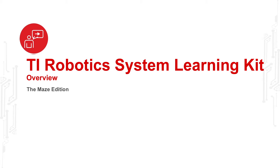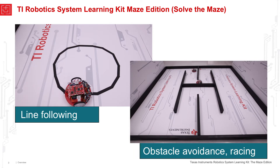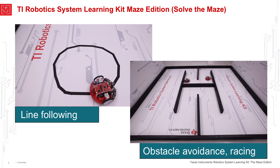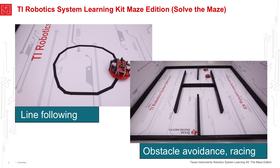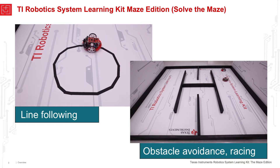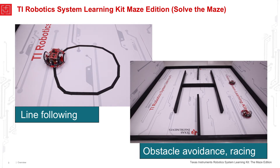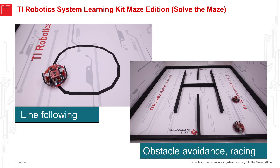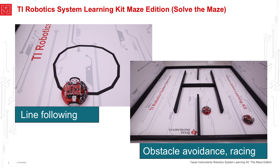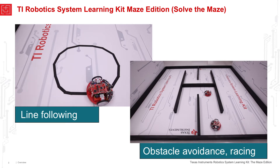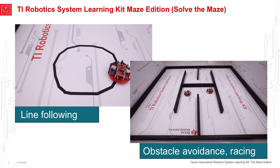Hi, John Valvano here. Let me introduce you to the curriculum: the Robot Systems Learning Kit, the Maze Edition. The ultimate goal of the learning kit is to design, build, and test a robot system capable of solving complex tasks. Example challenges you might try are line following, maze exploring, and autonomous driving. However, it's not the final robot that matters, but the educational journey that discovers a wide range of engineering principles in the process.